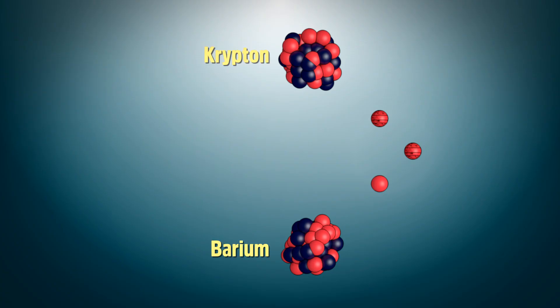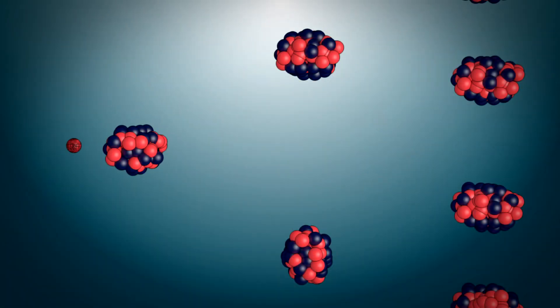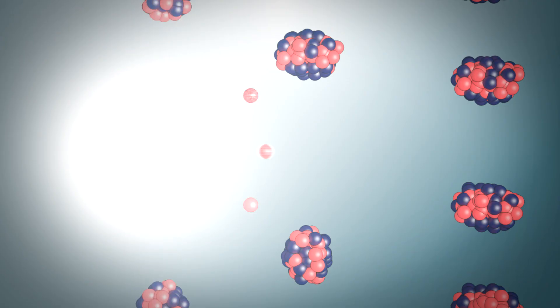In the process of splitting and creating two more stable atoms, a whole bunch of energy is released along with three more neutrons. These three neutrons fly out and slam more U-235 atoms.